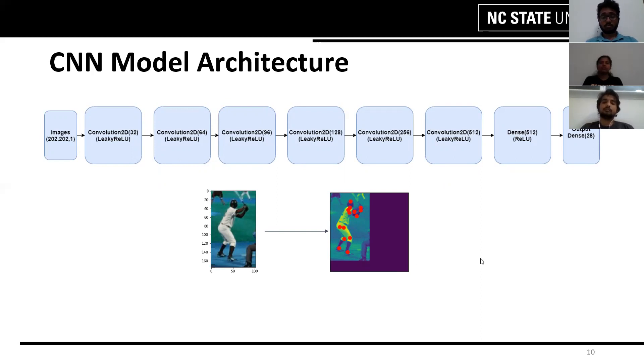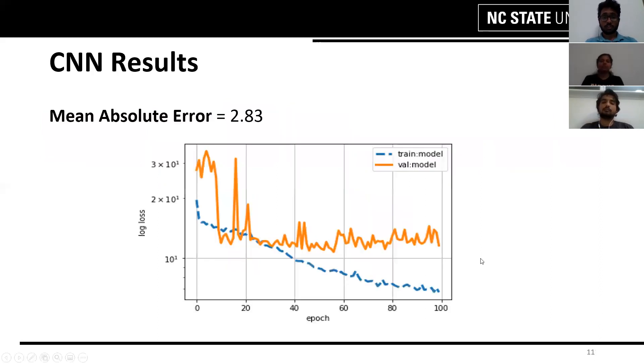Coming to the training of the CNN, we can see that as training progresses the training loss reduces and the validation loss also decreases initially but then saturates at 40 or 50 epochs. We can see that the mean absolute error for this CNN is around 2.83 which is fairly better compared to the baseline ResNet architecture which has an MAE of about 10.5.